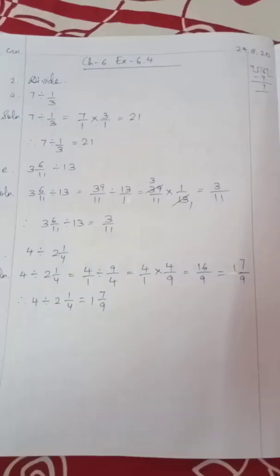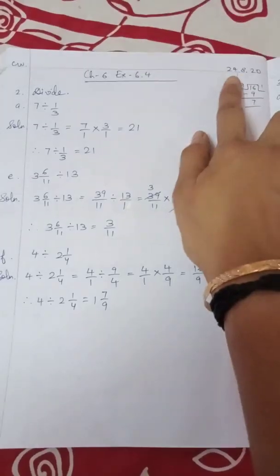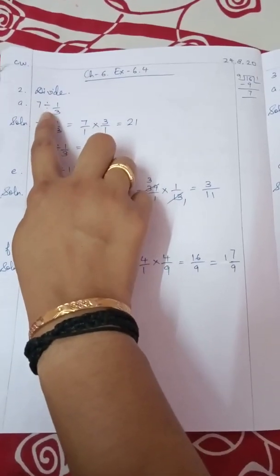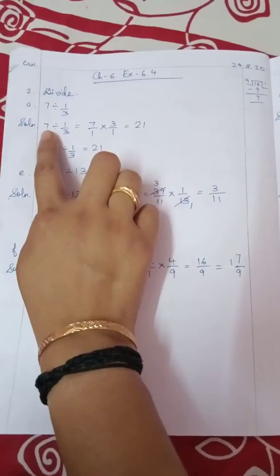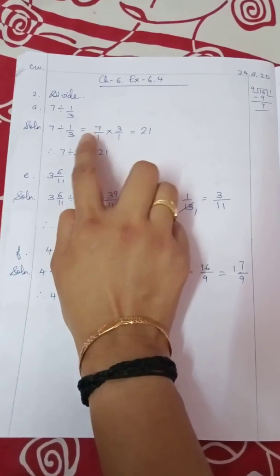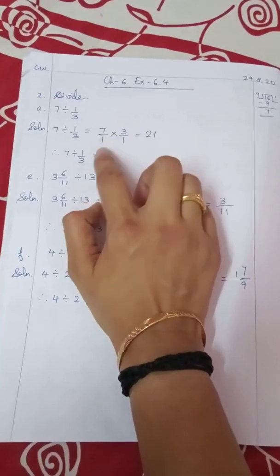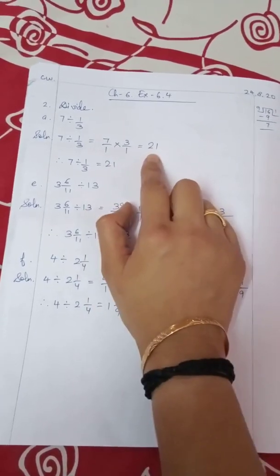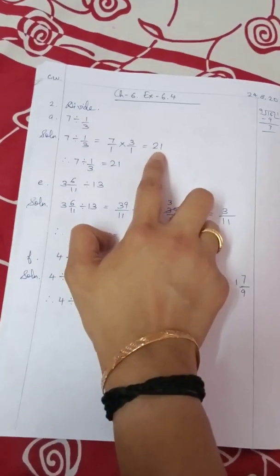Let us do some exercises. Students, look at page number 79 of your maths book — exercise 6.4, question number 2. Question number 3 on the next page has to be done in the copy. This is your classwork. Please write today's date and you can always draw a rough column on the right-hand side. Question number 2: a whole number divided by a fraction — 7 divided by 1 by 3. Write 7 as a fraction: 7 by 1. Change the sign to multiplication and reciprocal the second fraction: 1 by 3 reciprocal is 3 by 1. No common factor, so 7 threes are 21 and one 1 is 1. We ignore 1 in the denominator, so the answer is 21.